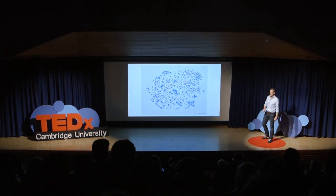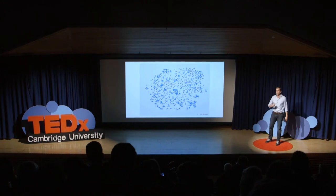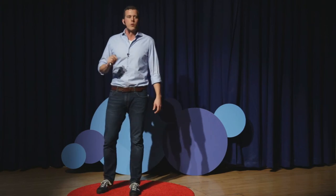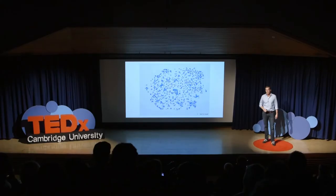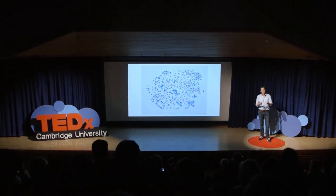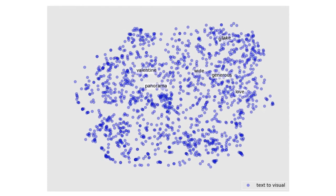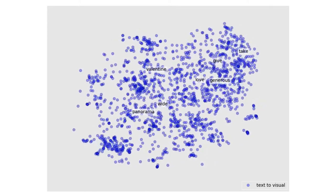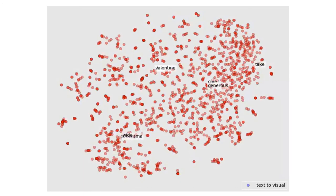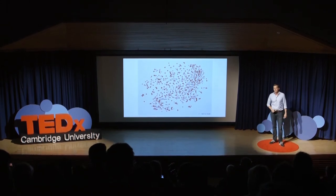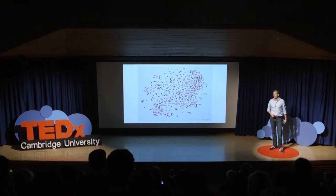What I'd like to show you is what happens when we make the transition from textual information to visual information. Here we have some concepts highlighted in this space — every point is a word and its location is determined by its meaning. 'Give' and 'take' are so close linguistically that they actually overlap. But we know that 'generous' should be much closer to 'give' than to 'take.' We also know visually that 'love' and 'valentine' should probably be closer to each other, and the same goes for 'white' and 'panorama.' When we move to visual space, 'white' and 'panorama' move together, 'love' and 'valentine' move together, and 'give' moves towards 'generous' and away from 'take' — giving a different perspective on meaning that is probably closer to what you really want.